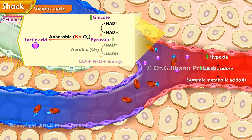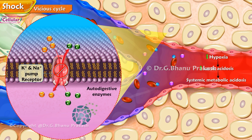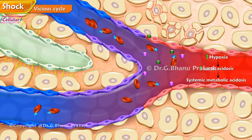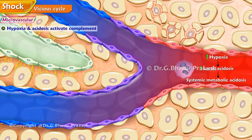As glucose within cells is exhausted, anaerobic respiration ceases and there is a failure of sodium-potassium pumps in the cell membrane and intracellular organelles. Intracellular lysosomes release autodigestive enzymes and cell lysis ensues. Intracellular contents including potassium and calcium are released into the bloodstream. Microvascular stage: Hypoxia and acidosis activate complement and prime neutrophils, resulting in the generation of oxygen free radicals and cytokine release.